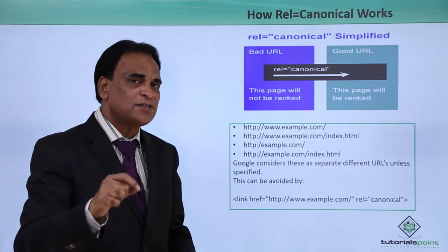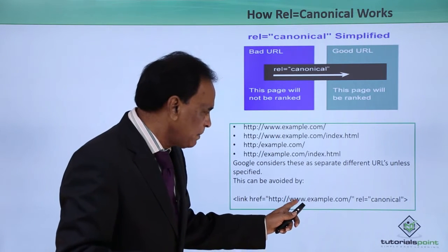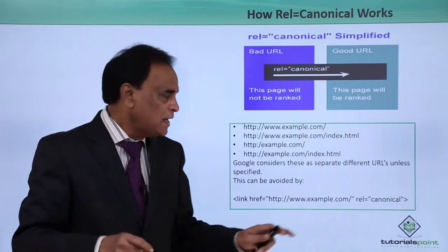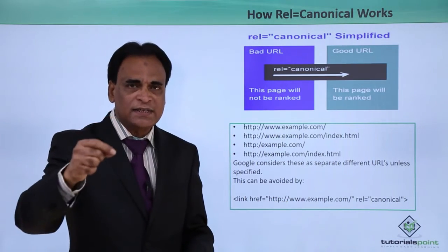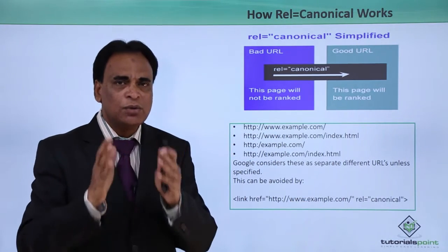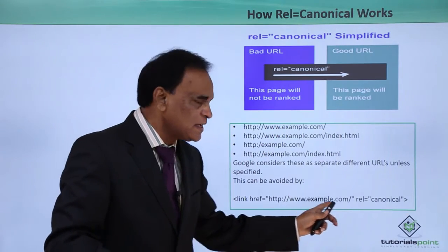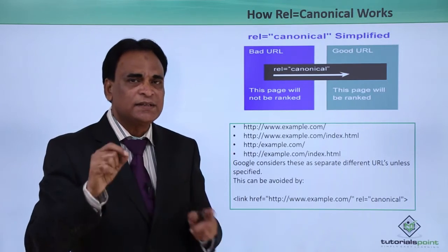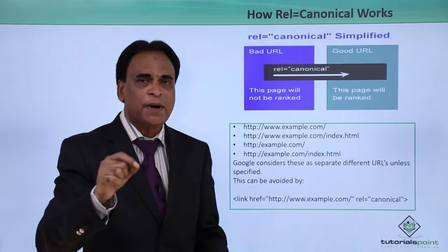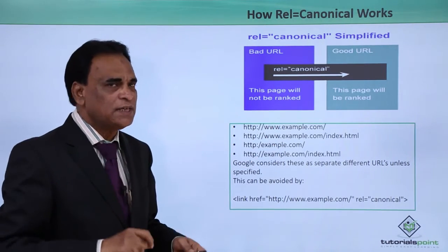How can you specify this to Google? By giving this link: href="http://example.com/" rel="canonical". This tag has to be placed in the header part of your website on the home page. Once you do this, Google treats these different URLs as one URL. Placing this tag in the header is the foremost step to avoid these duplicate URL issues.